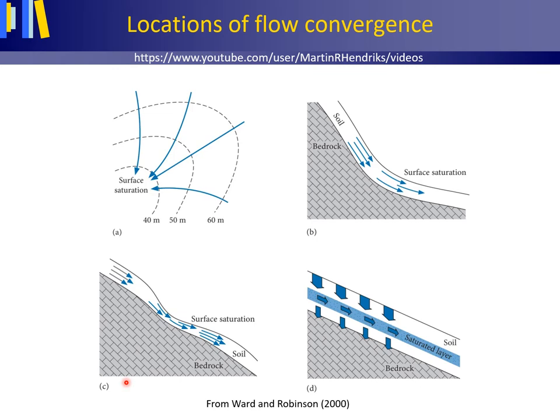Also, where an upper layer in the soil that supports throughflow becomes thinner, a local water table — the so-called perched water table — may develop and rise to the land surface, as shown under C.